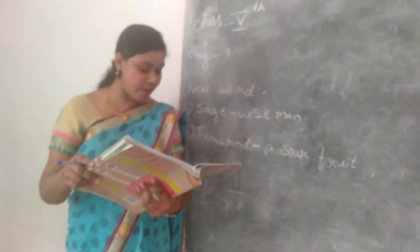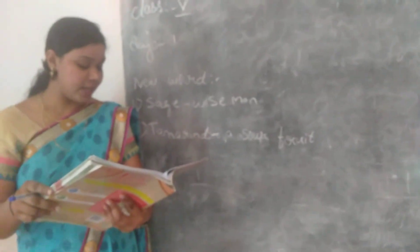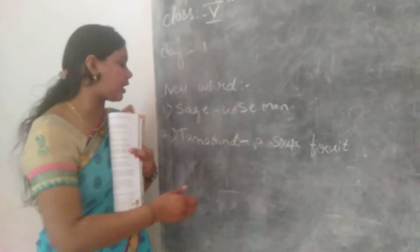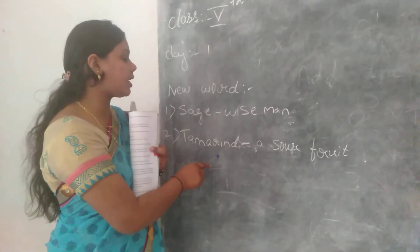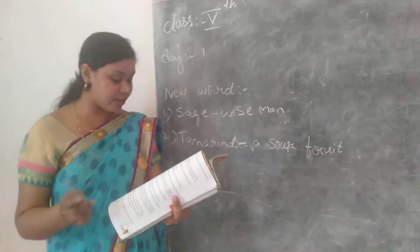Next. The King found the ghost in the forest and tamarind tree. That means, tamarind, what is the meaning of tamarind? Tamarind means yes or fruit. Sage means wise man. So what is the last name?